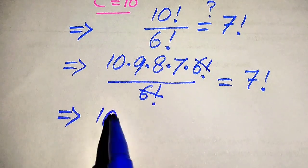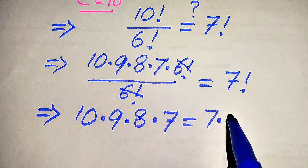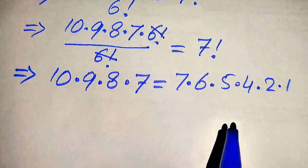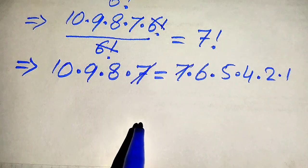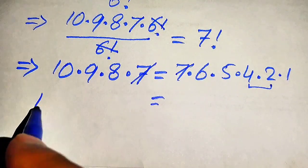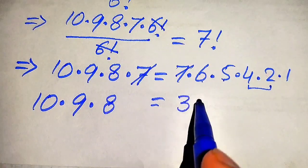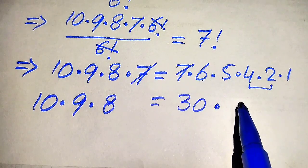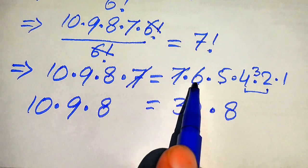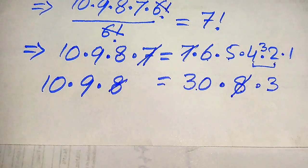We expand 7 factorial as 7 × 6 × 5 × 4 × 3 × 2 × 1. The 7s cancel on both sides. Then 4 × 2 gives 8, and 8 cancels with 8. We also get 6 × 5 = 30 and the remaining 3, so the right side gives 30 × 3 = 90.